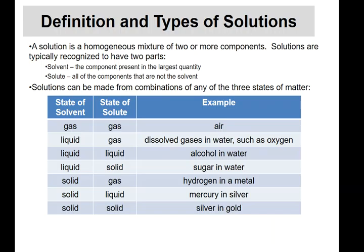Now if you have a solution mixed with two things that are equal amounts, you can argue about which one is the solute and which is the solvent — in the end it doesn't matter. But typically, the one present in the largest quantity is called the solvent and the other is the solute.